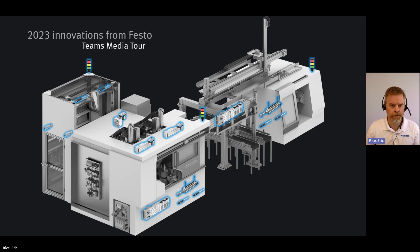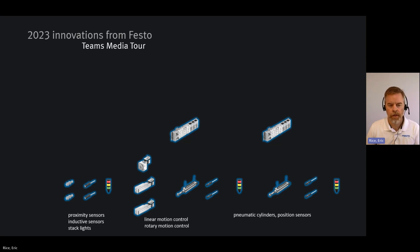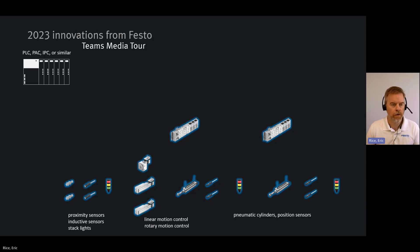The way we typically look at this, instead of scattered around on the machine, we'll display these in a 2D diagram where field devices are at the bottom — sensors, stack lights, other outputs, motors, drives, and pneumatic components — all near the bottom of the hierarchy. Then up near the top we'll have our PLC or other machine controller, and we connect all these devices together.